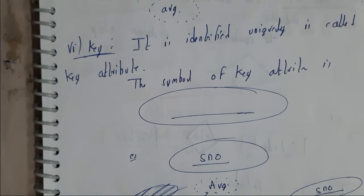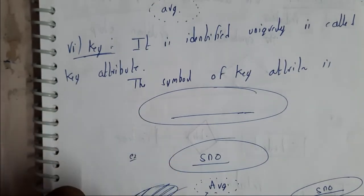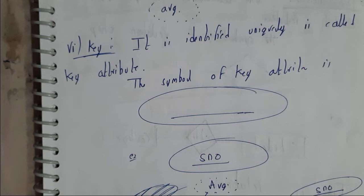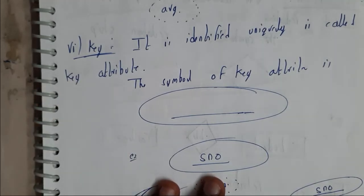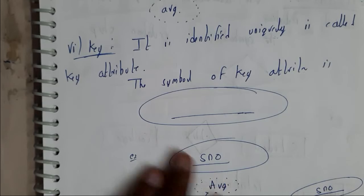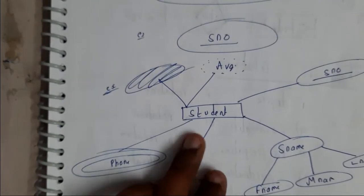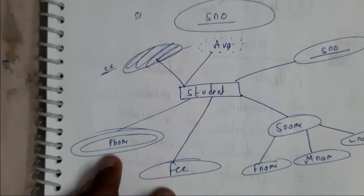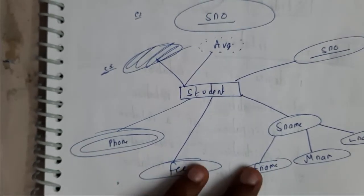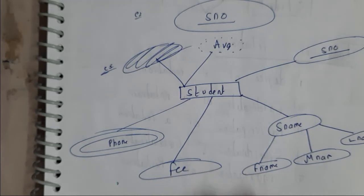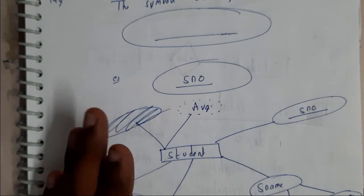A key attribute uniquely identifies an entity. Examples include Aadhaar number and PAN number — these are completely unique values. For instance, with a student entity: phone number is multi-valued, fee is single-valued, and student number is the key attribute.